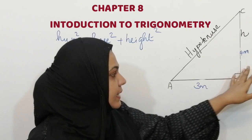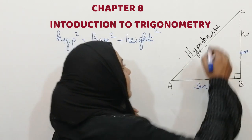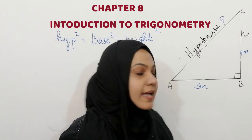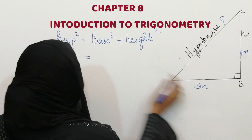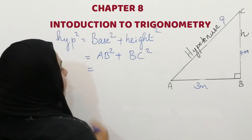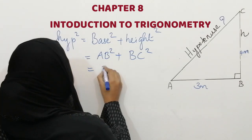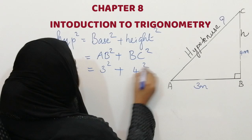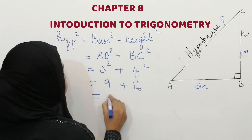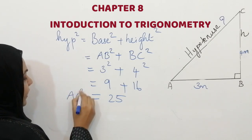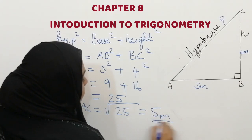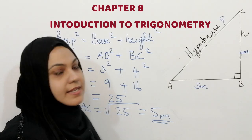Here they have given AB and BC as base and height, and we have to find the hypotenuse. Hypotenuse square is equal to sum of the squares of base and height. AB square is the base square, and BC square is the height square. AB is 3, so 3 square is 9, and BC is 4, so 4 square is 16. So AC square is equal to 9 plus 16 that is 25, and AC is equal to square root of 25, that is 5. We have now finished two questions related with hypotenuse.